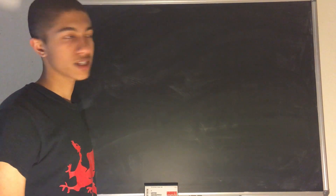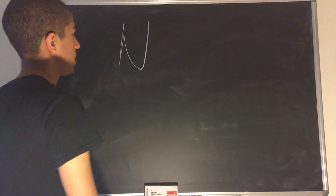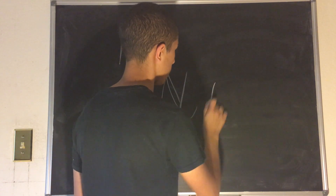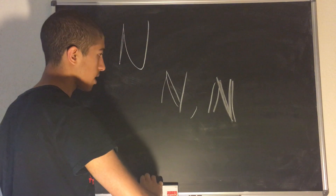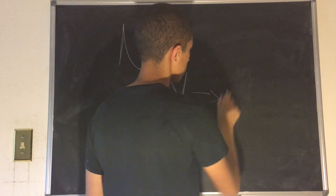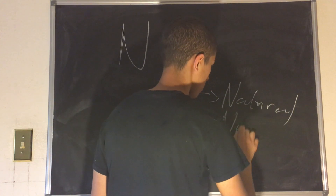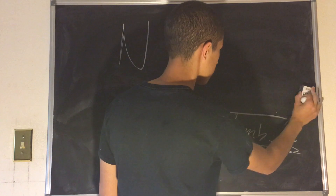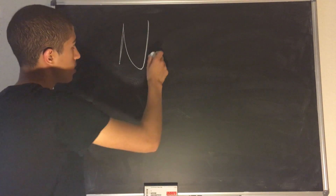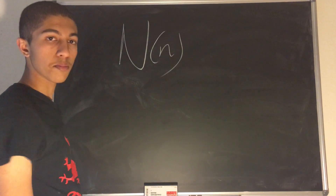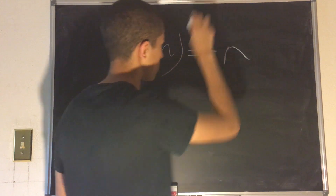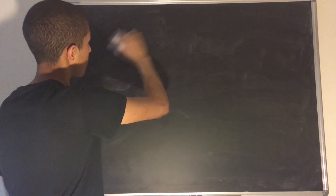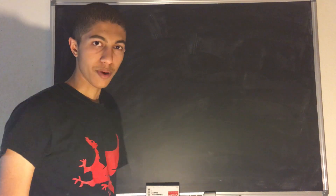The last function on our list today is the function capital N. Do not confuse this with boldface N, which represents the natural numbers. This function N is an arithmetic function which takes an input n and spits out that same input n — it is the identity map. It is very important in number theory, and we will see why in the following video when we talk about Dirichlet convolutions.